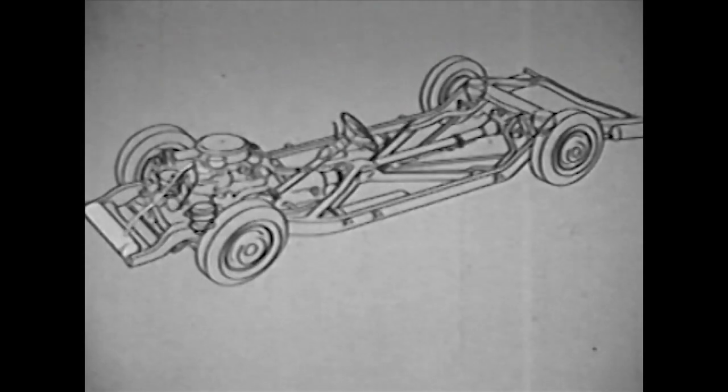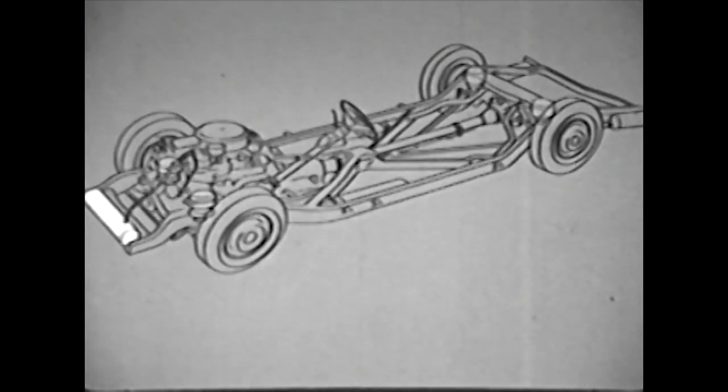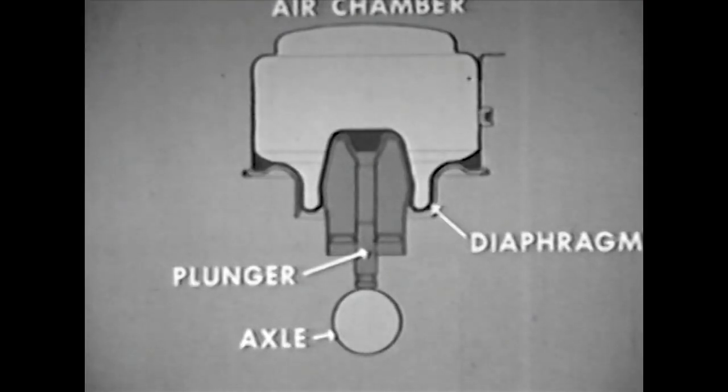Part of the system is the compressor, belt driven by the engine, that keeps the storage tank full of compressed air at a hundred pound pressure. The air is piped from the tank to the four air chambers that replace the four steel springs.